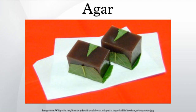In culinary use, agar-agar is a natural vegetable gelatin counterpart. White and semi-translucent, it is sold in packages as washed and dried strips or in powdered form. It can be used to make jellies, puddings, and custards. For making jelly, it is boiled in water until the solids dissolve. Sweetener, flavoring, coloring, fruit, or vegetables are then added and the liquid is poured into molds to be served as desserts, or incorporated with other desserts such as a jelly layer in a cake.